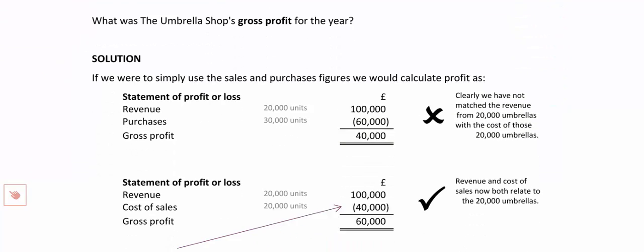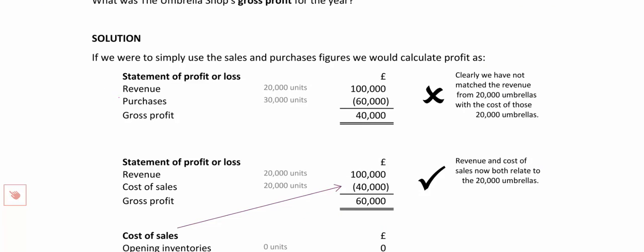Let's start by getting it wrong. If we ignore the cost of sales formula and instead use revenue less purchases as gross profit, I'd take my revenue from selling 20,000 umbrellas — £100,000 — and compare it to the cost of 30,000 umbrellas, which was £60,000. That only shows a profit of £40,000, which doesn't feel right. Because if I sold 20,000 umbrellas at a profit of £3 per umbrella, my profit should be £60,000. We have a mismatch: I am showing the cost of everything I bought — 30,000 units — but I haven't sold all of them. I have not matched that expense to the income.